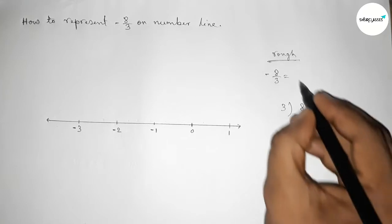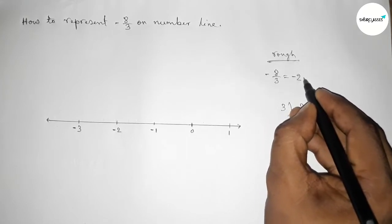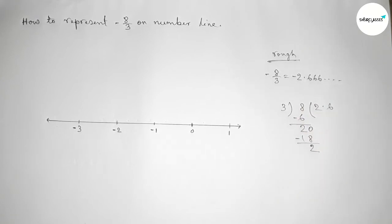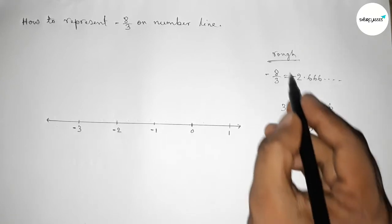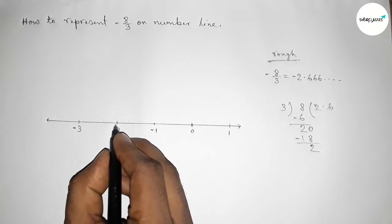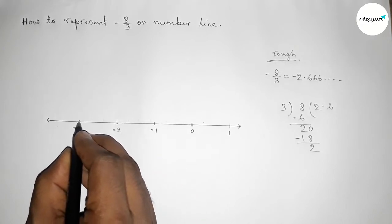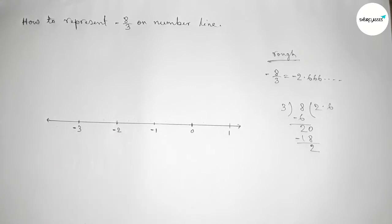The value of minus eight by three equals to minus two point six six and continuous. The value minus eight by three will be between minus two and minus three.